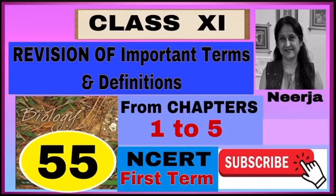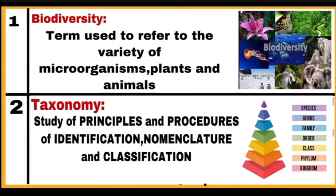Hello students, here we will revise 55 important terms and definitions from chapters 1 to 5, and questions based on these can easily come in your first term exam. Biodiversity: it is the term used to refer to the variety of microorganisms, plants and animals present on earth, or the number and types of organisms present on earth is called biodiversity.